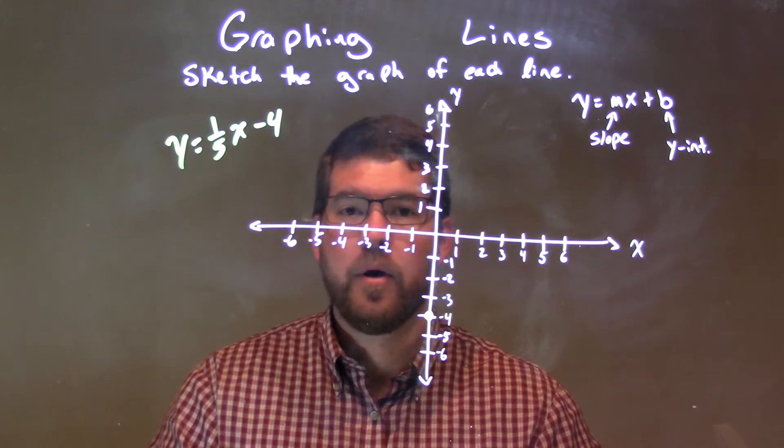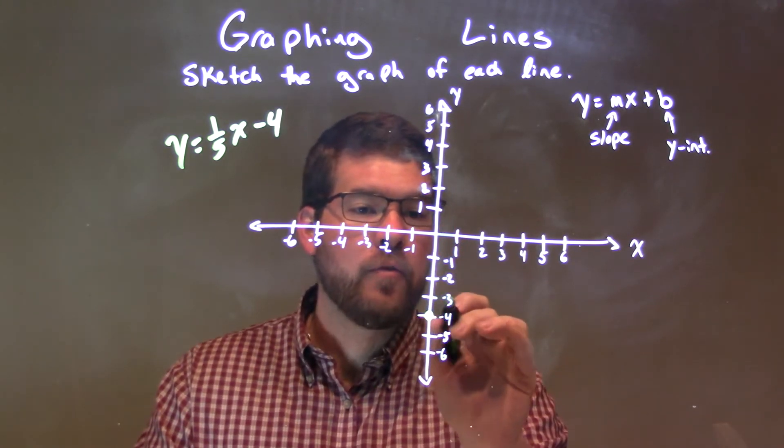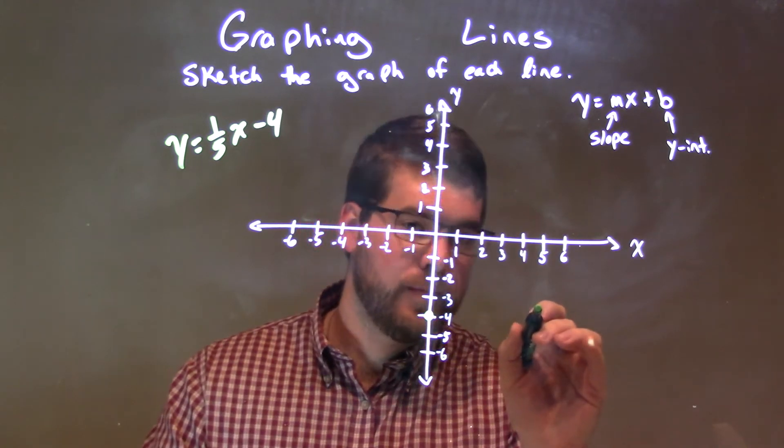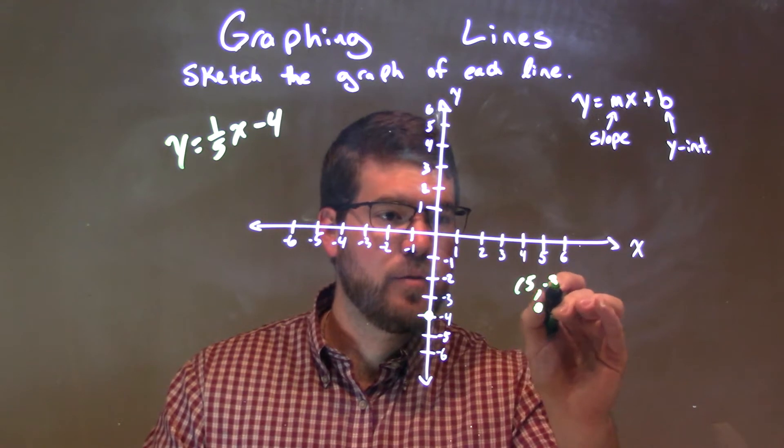Then, that tells we have a slope of positive 1 fifth. That means we go up 1 unit over 5. 1, 2, 3, 4, 5. So, we have a point right here, and that point is 5 comma negative 3.